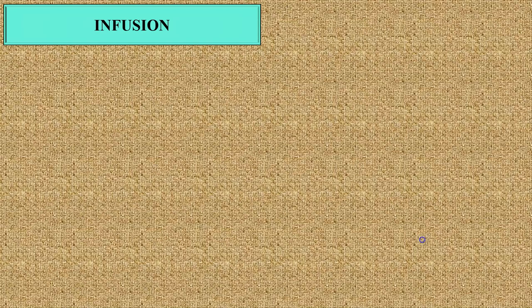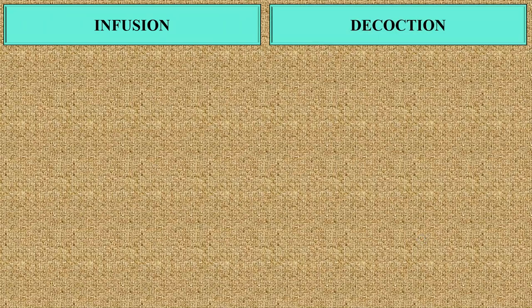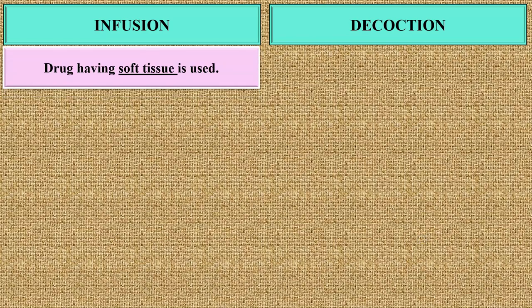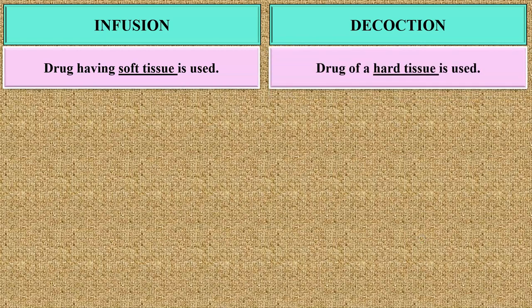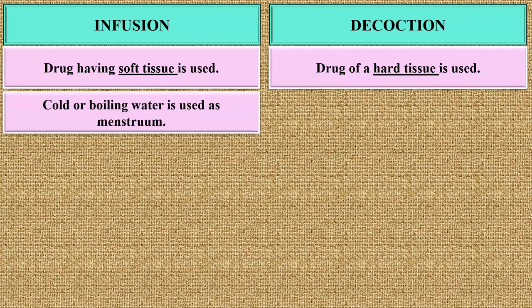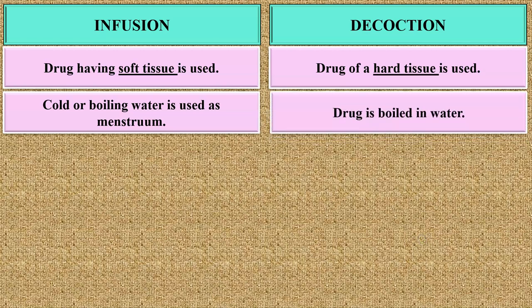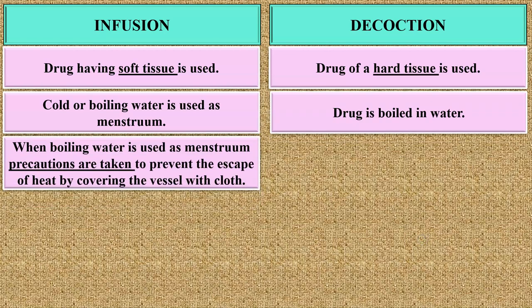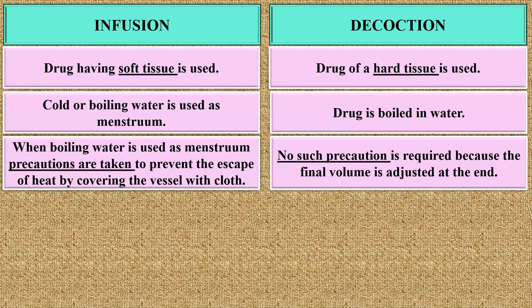Next is the difference between infusion and decoction — these are extraction processes. In infusion, the drug having soft tissue is used, whereas in decoction, the drug of hard tissue is used. In infusion, cold or boiling water is used as menstruum, whereas in decoction, the drug is boiled in water. When boiling water is used in infusion, precautions are taken to prevent the escape of heat by covering the vessel with cloth, whereas in decoction, no such precaution is required because the final volume is adjusted at the end.